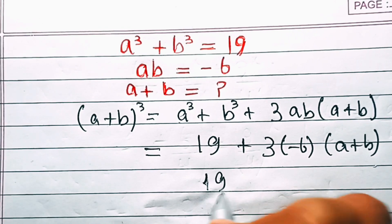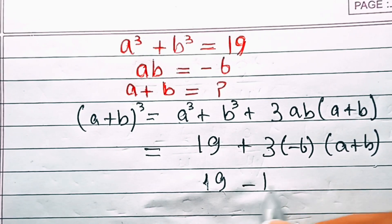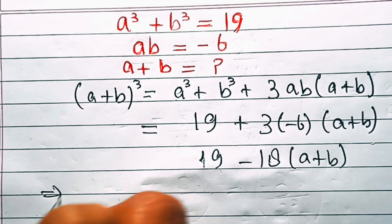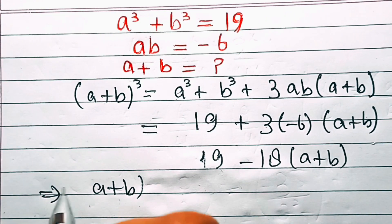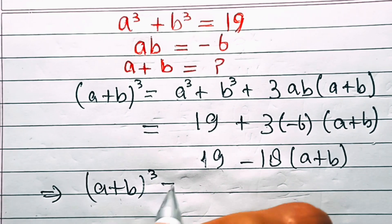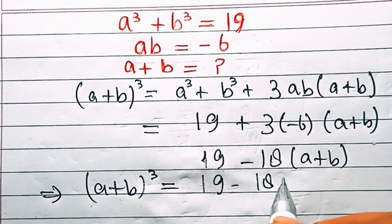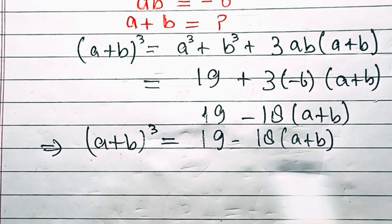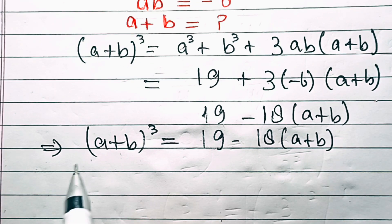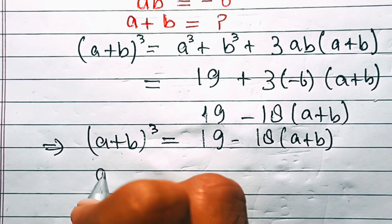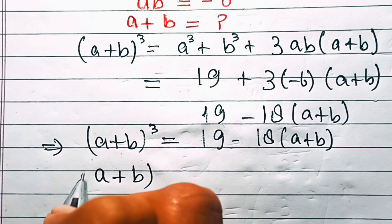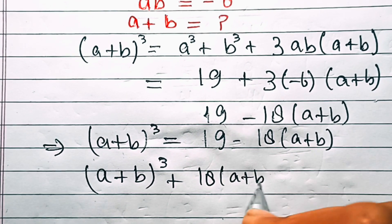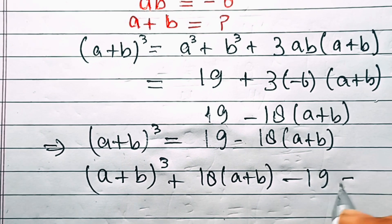So this is 19, and 3 times minus 6 is minus 18 times (a+b). This implies that (a+b)³ is equal to 19 minus 18(a+b). Now let's move everything to the left-hand side, giving us (a+b)³ + 18(a+b) minus 19 equals 0.